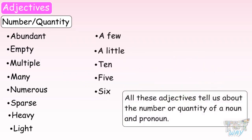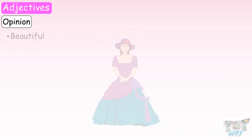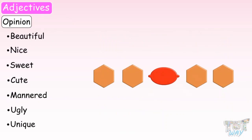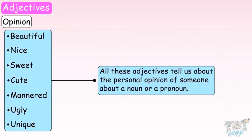All these adjectives tell us about the number or quantity of a noun and pronoun. Opinion adjectives include: beautiful, nice, sweet, cute, mannered, ugly, unique. All these adjectives tell us about the personal opinion of someone about a noun or a pronoun.